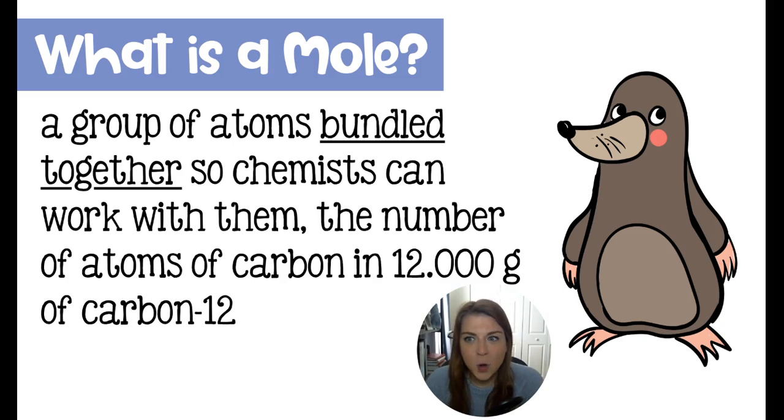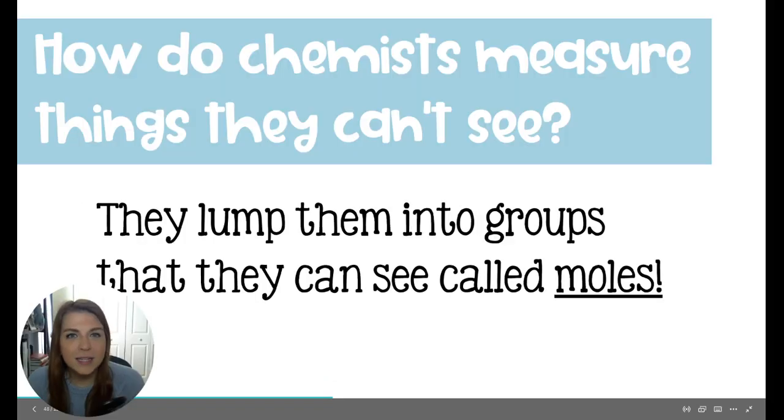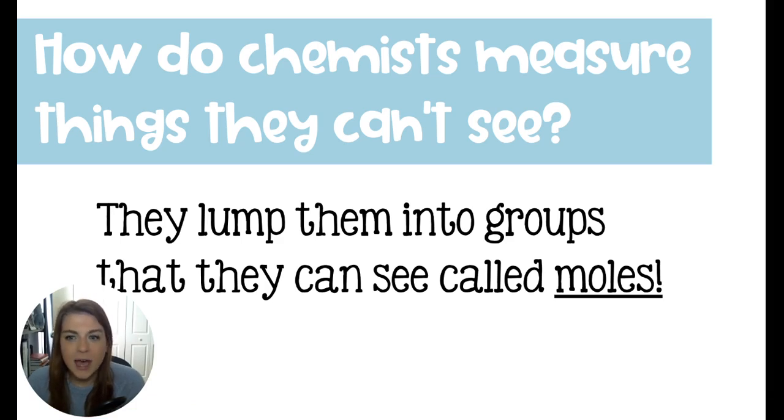Now, you may think of mole and think of this cute little guy or like a freckle. We're talking moles like chemistry moles. Anytime you have to Google something, make sure to Google a chemistry mole. It's also a shortened version of molecule. That's where the word came from. So getting back to that initial question, how do chemists measure things that they can't see? They bundle or lump those atoms into groups that we can see and we call those groups moles.